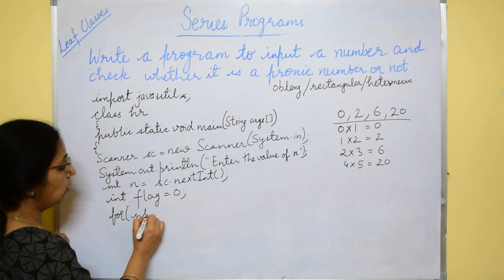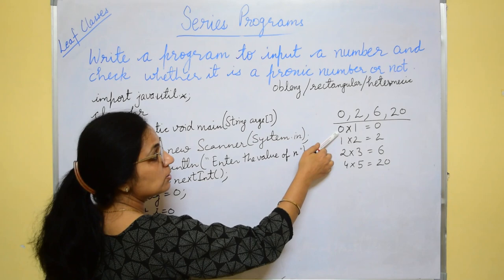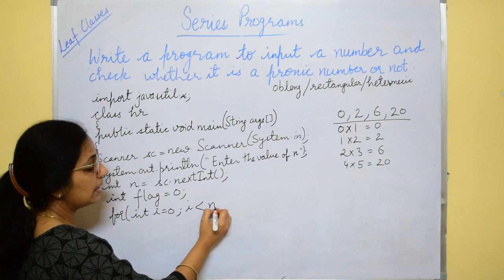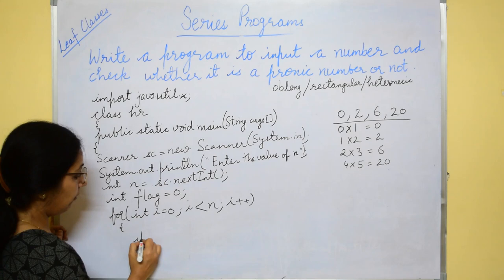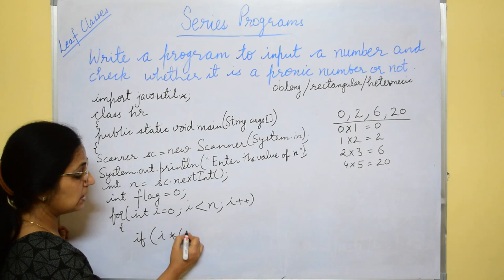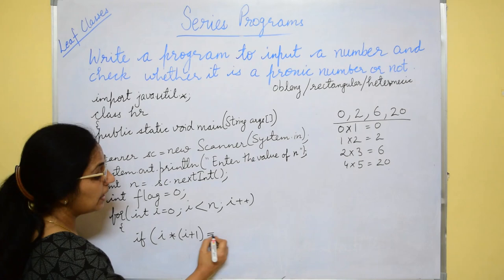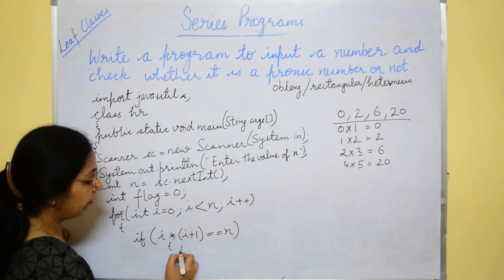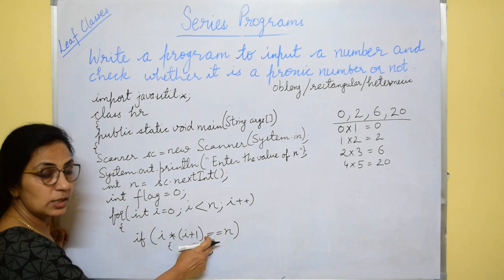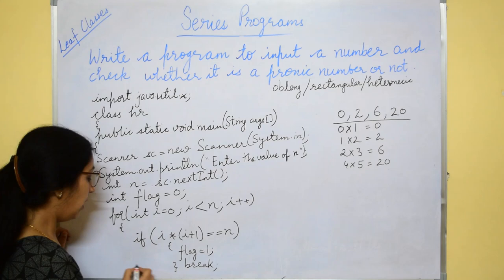Now let's take the loop. Here we'll use the loop from i equals to 0 because 0 is also pranic. i less than n, i plus plus and here you will check if i and i plus 1 product is equals to n, then we flag value 1, meaning pranic number condition is satisfied, or will break and will come out of the loop.